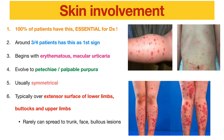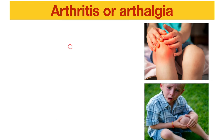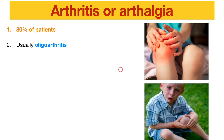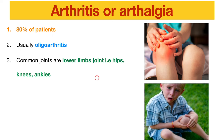Whenever you see a patient with bilateral petechiae or purpura, think about HSP. Remember they are non-blanchable. The second presentation is arthritis — 80% of patients have it. It is usually oligoarthritis, affecting one or very few joints.